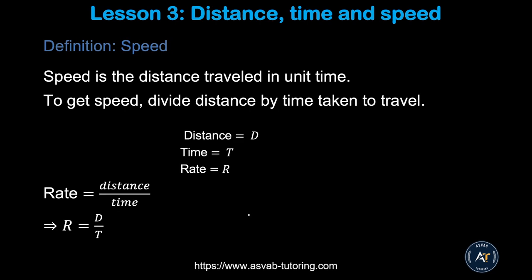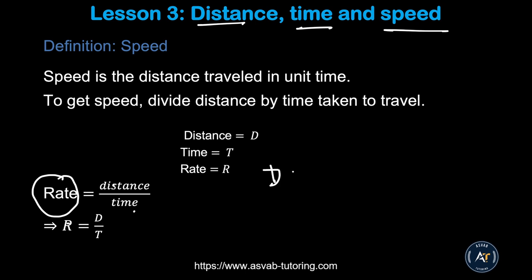The next thing we'll learn is a very important concept: how to find distance, time, and speed. Speed is the distance traveled in unit time. Say you are driving from New York to Washington DC, which is around 280 miles, and it takes five hours — how fast did you drive? How fast you drove is called the speed or rate. To find it, you do distance divided by time. Remember this formula: R = D/T, or D = RT. You need this formula many times.